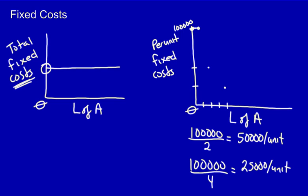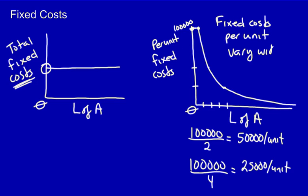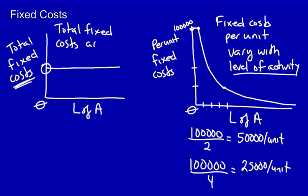You can see what's happening here. Our per unit fixed costs is an exponential. Every time we produce additional units, it's going to decrease the cost per unit. Fixed costs per unit vary with the level of activity. However, total fixed costs are constant, regardless of the level of activity.